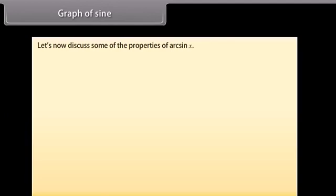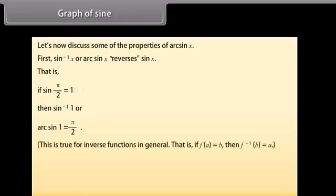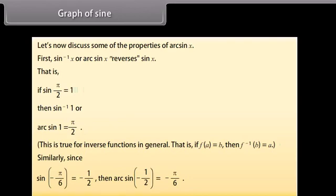Let's now discuss some of the properties of arc sin x. First, sin⁻¹ x (arc sin x) reverses sin x. That is, if sin(π/2) = 1, then sin⁻¹(1) = π/2. This is true for inverse functions in general: if f(a) = b, then f⁻¹(b) = a. Similarly, since sin(−π/6) = −1/2, then arc sin(−1/2) = −π/6.